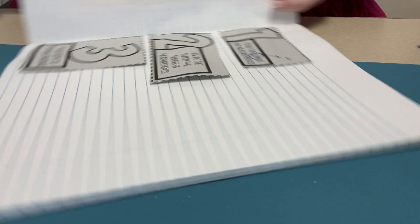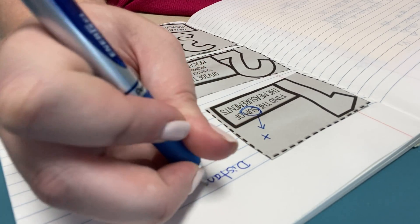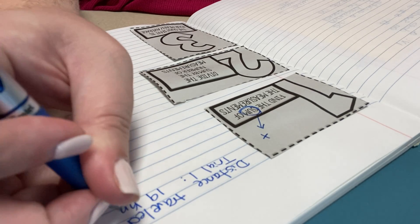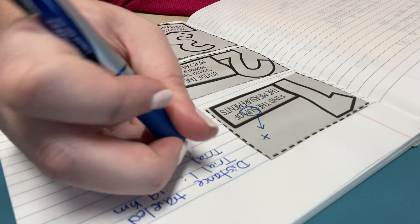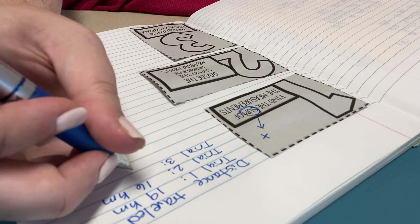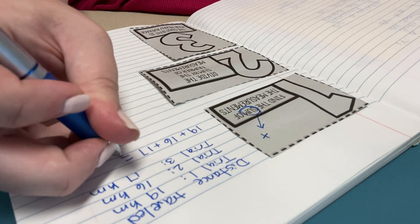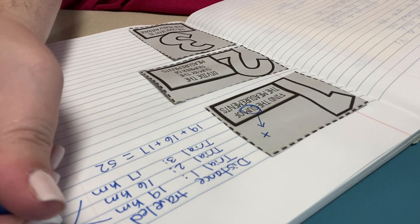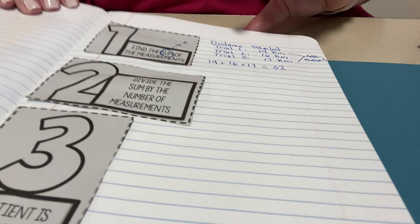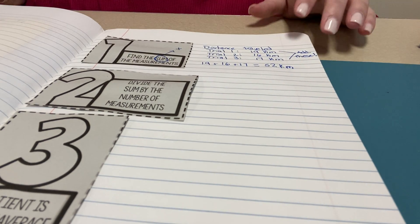We're going to pretend that we have done an experiment where we were looking at the distance traveled. And in trial one, we traveled 19 kilometers. In trial two, we traveled 16 kilometers. And in trial three, we traveled 17 kilometers. So we're going to add it up. 19 plus 16 plus 17 equals 52. So we have our first step done. We have 52 kilometers. I need to make sure I also include measurements so I know what I'm using as a unit of measure.